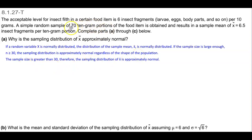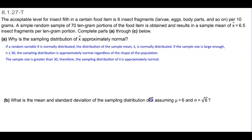So we can look at the sample size, which is 70. The sample size is greater than 30. Therefore, the sampling distribution of the sample mean is approximately normal.